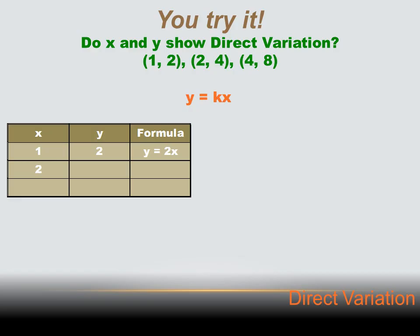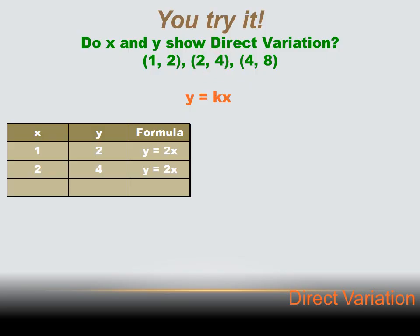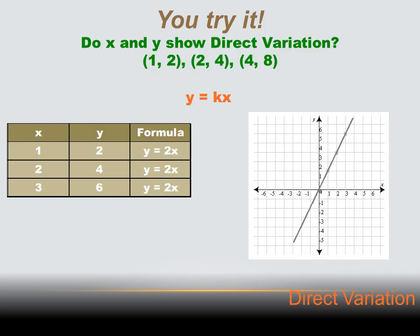For the second ordered pair, I've got an X value of 2. If I use the same formula and multiply that 2 by 2, do I get 4? Yes, I sure do — so that works out. For the third ordered pair, that works out too. So it looks like a direct variation to me. And when I graph it, I get a straight line that goes through the origin.